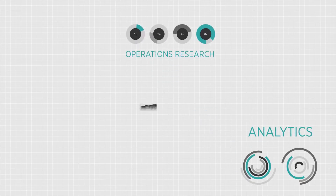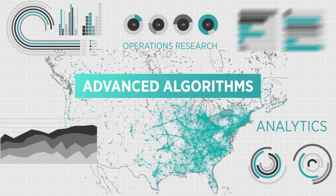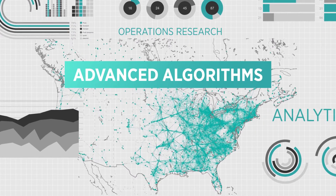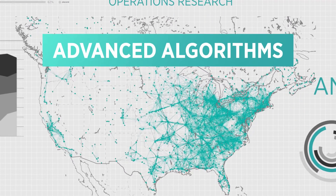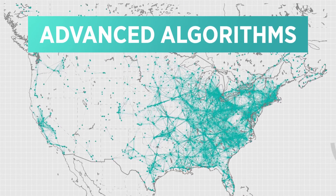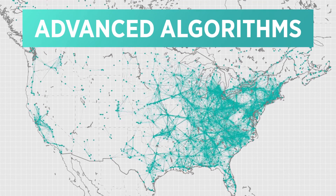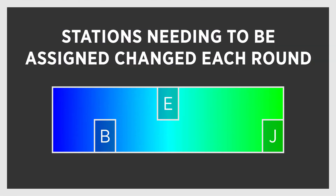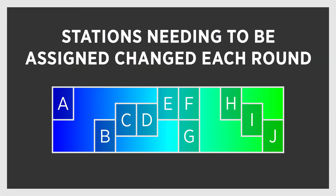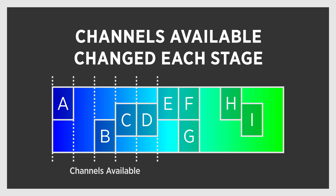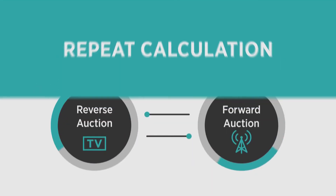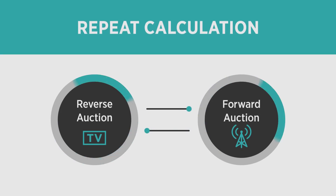The auction therefore required algorithms that could determine for any set of TV stations whether there was a channel assignment for each station that would allow all stations to reach their existing viewers from their existing facilities. And since the set of stations needing to be assigned changed each round and the channels available also changed each stage, the procedure had to do this calculation repeatedly and quickly.